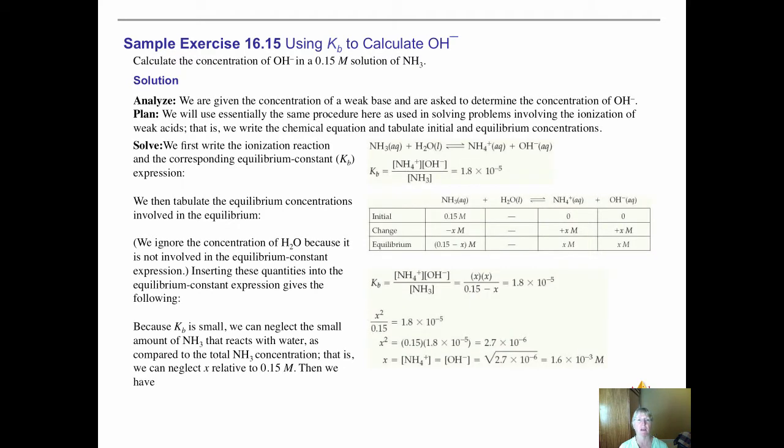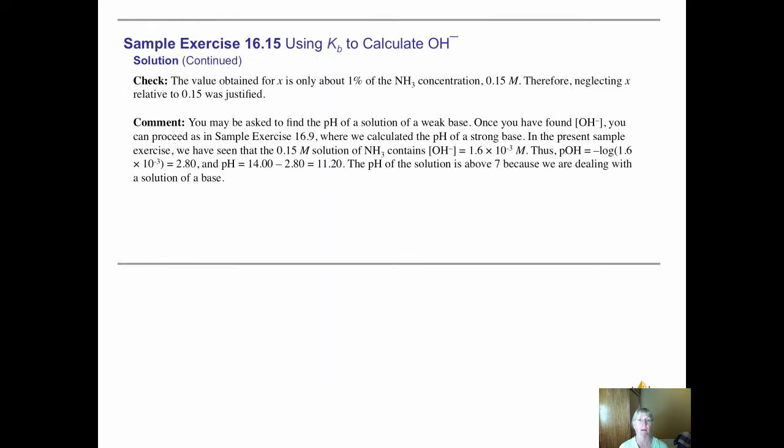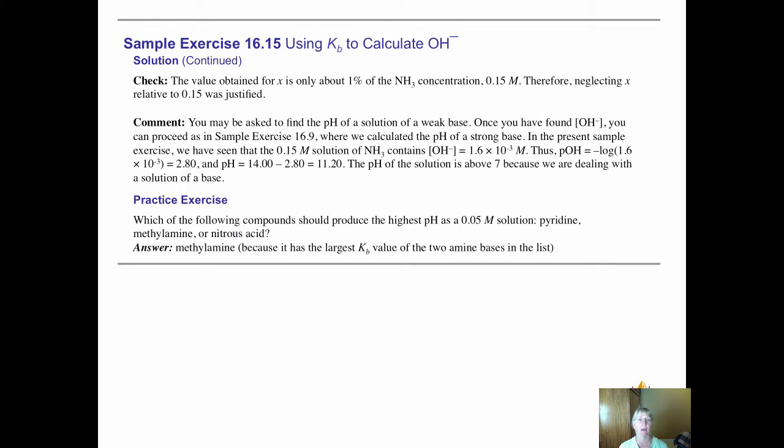This was sample exercise 16.15, and in fact the PowerPoint version of the problem took us all the way to pH. This problem just takes you to the concentration of the hydroxide. I did want to point out that they went ahead and substituted in that concentration of the hydroxide versus the original NH3, and came up with a 1% value. So if we were having to check to make sure that ignoring the X was okay, we are okay here. If it's less than 5% of the original concentration, it's fine to omit the X and simplify your calculations.